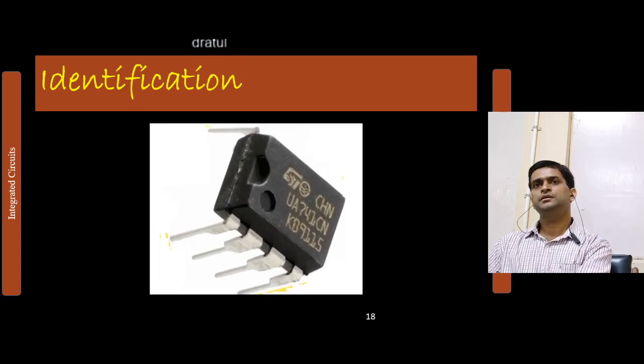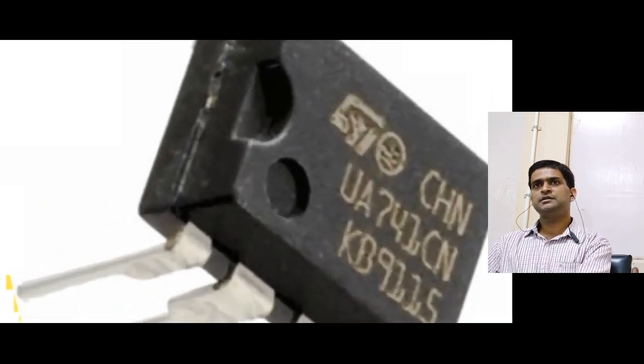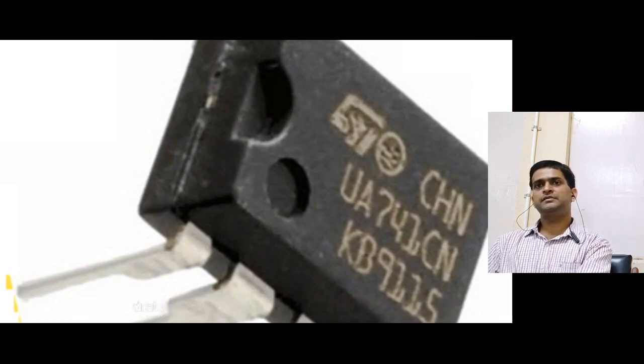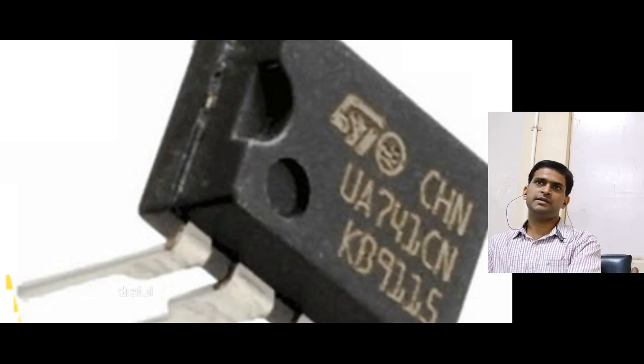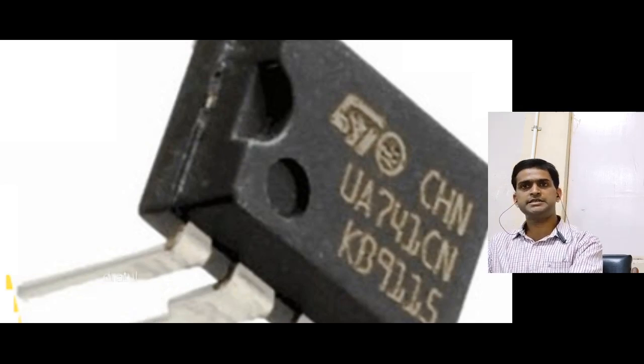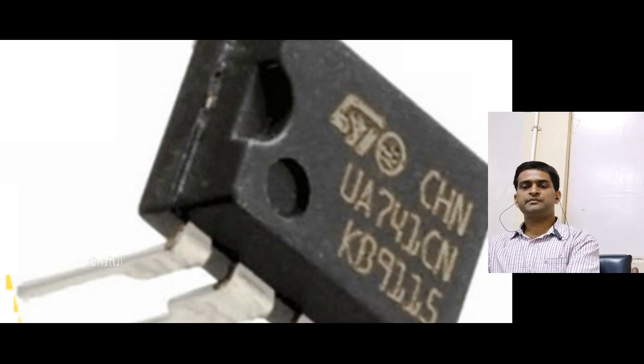If you zoom or see with the help of a lens, the number of IC, you can see what is written in front of the 741. So, if in front of the 741, there is a mu A, then we can really understand that IC is manufactured by the Fairchild.